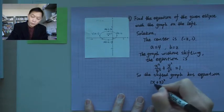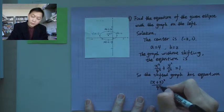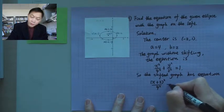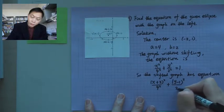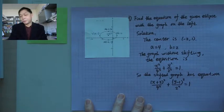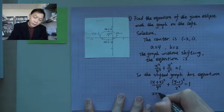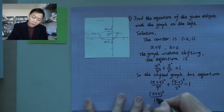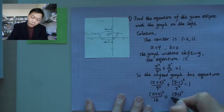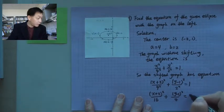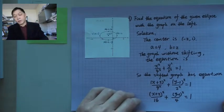So over 4 squared, and then plus y minus 1 over 2 squared equals 1. Or you may write the final answer as: (x+2)² over 16 plus (y−1)² over 4 equals 1. That's the final answer.